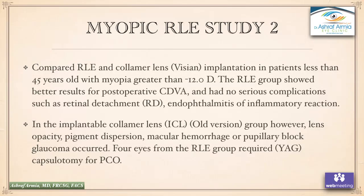Study two compared refractive lens exchange with implantable collamer lens (ICL) implantation in patients under 45 years old with myopia greater than minus 12 diopters. The RLE group showed better results for postoperative corrected visual acuity and had no serious complications such as retinal detachment, endophthalmitis, or inflammatory reaction. In the older ICL version group, however, lens opacity, pigment dispersion, macular hemorrhage, or pupillary block glaucoma occurred. Four eyes from the RLE group required YAG laser capsulotomy for PCO.